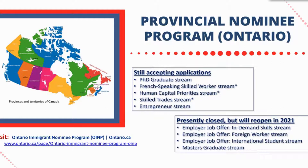This is great for international students who have been postgraduate work permit holders, allowing them to start with a company in a different province right away. In Ontario presently, they are still accepting applications for the PhD graduate stream, French-speaking skilled worker stream, human capital streams, priority stream, skilled trade stream, and entrepreneur stream. Currently closed but reopening this year are the in-demand skill stream, foreign worker stream, international student stream, and master's graduate stream.